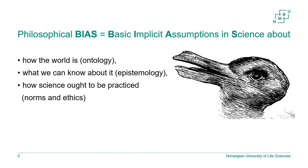Such assumptions can be of three types: assumptions about how the world is, which we call ontology; assumptions about what we can know about the world, which we call epistemology; and assumptions about how science ought to be practiced, which are philosophical biases about norms and ethics.